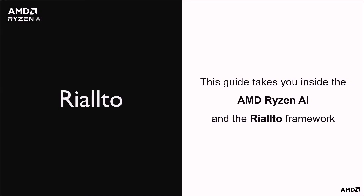This video will take you inside Ryzen AI with Rialto. Ryzen AI is a new Neural Processing Unit or NPU for machine learning. Rialto is an open source exploration framework for first-time Ryzen AI developers. It lets you explore the architecture and learn how to start programming the Ryzen AI NPU.